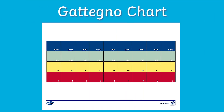Hi everyone, I'm Catherine from Twinkl and today I'm going to be giving you some ideas on how you can use Gattegno charts. A Gattegno chart looks something like this. This one shows numbers increasing in ones, tens, hundreds and thousands, but it could show bigger numbers or decimals. It's a great way to teach children about patterns and relationships with numbers. Today I'm going to be showing you my top five ways to use Gattegno charts.